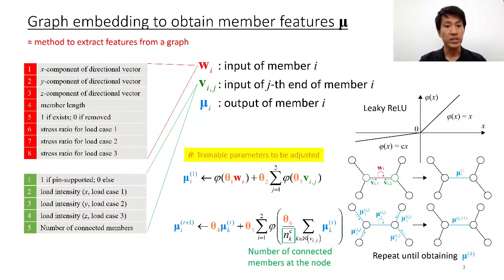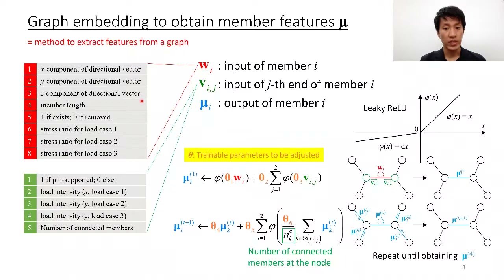This is our proposed graph embedding operation. What we need before the implementation is member input W and node inputs V. W is a vector including information about the member, such as direction, length, and force of the member. V is a vector including boundary condition, load, and local connectivity at the node. The purpose of this operation is to obtain mu, a feature vector with respect to the edge, the member.